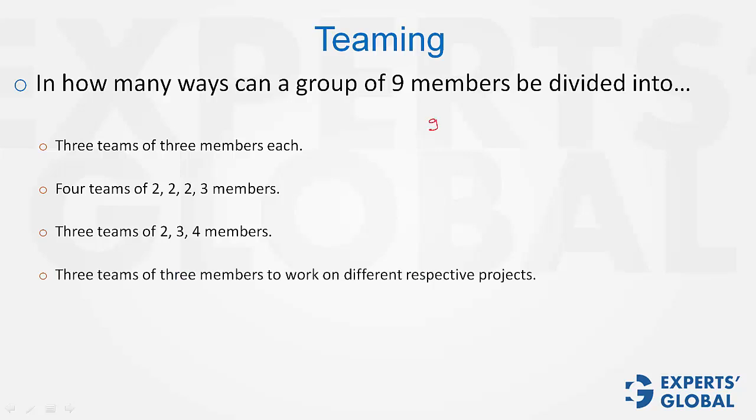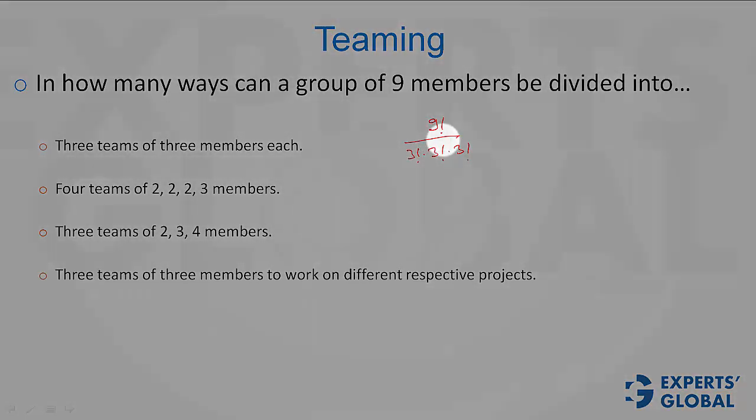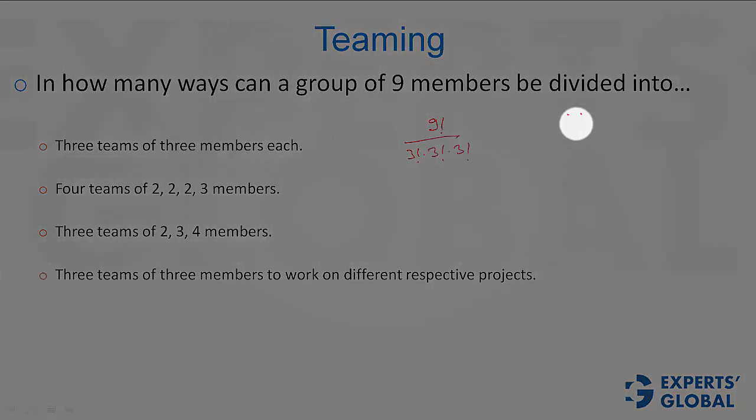Total ways is 9 factorial, out of which 3 teams of 3 members each - so 3 factorial times 3 factorial times 3 factorial. But imagine the 3 teams are identical. If these 3 guys come here and these 3 guys come here, it's not a new case, but the formula counts them as different cases. This entire answer should be divided by 3 factorial because the 3 teams are not unique. They are identical in size, they are the same.